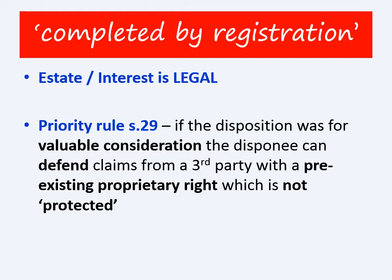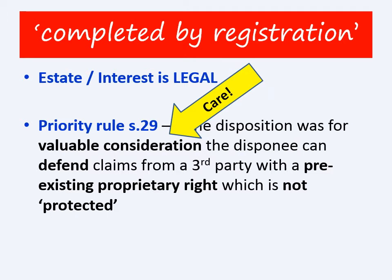We also saw that section 29 protects the transferee, or disponee as they are referred to in the Act, enabling them to defend any claims by third parties with pre-existing rights whose rights are not protected. Remember that the disposition must be for valuable consideration in order to get the protection of section 29 — this is often a point forgotten by students. So the first thing you should check when considering priority of interests where title has been registered is whether the disposition was for valuable consideration or not.